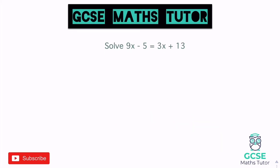So this one we've got 9x minus 5 equals 3x plus 13. Again here, 3x is the smaller value of x, so I'm going to subtract 3x on both sides of the equation. Taking away 3x would leave us with 6x over here, minus 5, and that equals positive 13, so I'll just write 13.